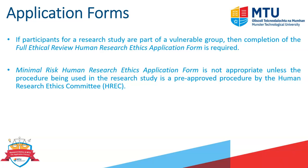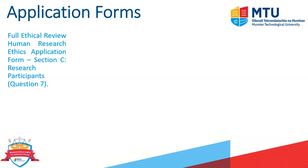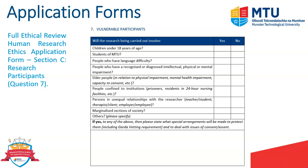The minimum risk human research ethics application form is not appropriate if we're carrying out research on vulnerable groups. The only exception is if the procedure used in the research study involving vulnerable groups is a pre-approved procedure by the human research ethics committee. In the full ethical review application form, Section C, Question 7 outlines the vulnerable participants and provides a checklist of which vulnerable participants, if any, are going to be involved in the research study. The list is not exhaustive — there can be other vulnerable groups, which is why the last option is 'others.'